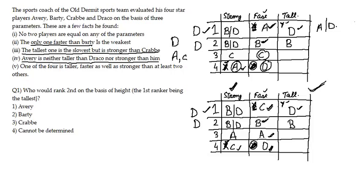The first question: who ranks second on the basis of height, the first rank being the tallest? Checking both tables, the second rank in height is B in both cases. So our answer is Bharti — the second option.